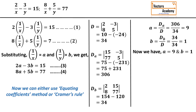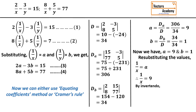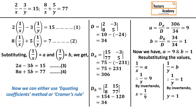Now once I get a and b, remember our question contains the variables x and y, so our answer is not the values of a and b but x and y. I resubstitute: since 1/x equals a and a equals 9, taking invertendo I get x equal to 1/9. Similarly, since 1/y equals b and b equals 1, I get y equal to 1. So the answer is x equals 1/9 and y equals 1.